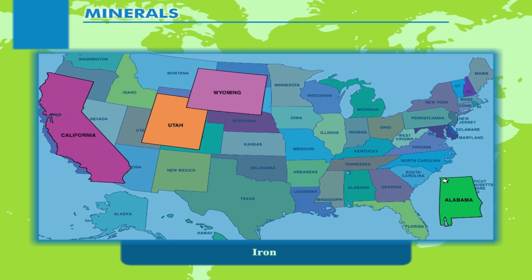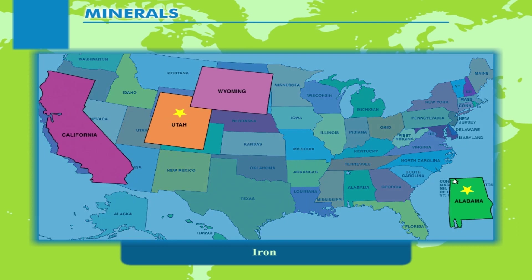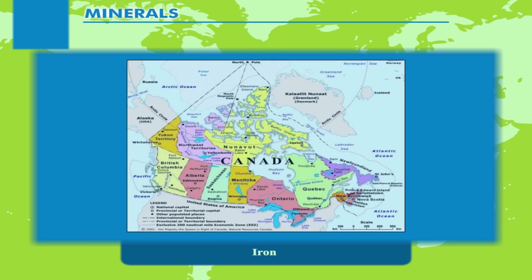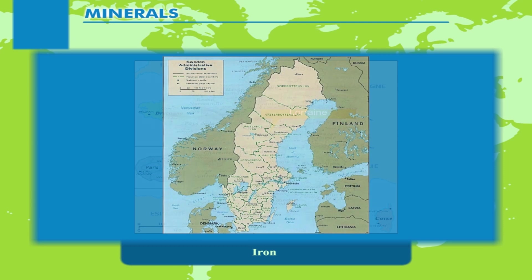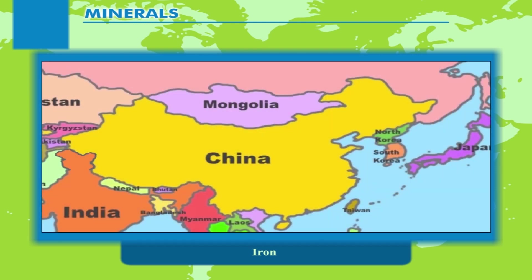Other mining areas in the USA are in the states of Alabama, Utah, Wyoming, and California. In Canada, the important iron ore mining areas are the Lake Superior region, Labrador, and Eastern Quebec. In France, the main iron ore mines are in Lorraine. Sweden is an important producer of iron ore with iron deposits at Kiruna and Gällivare. China has large deposits of iron ore in Anshan, Maanshan, Chengjiang, and Hainan.